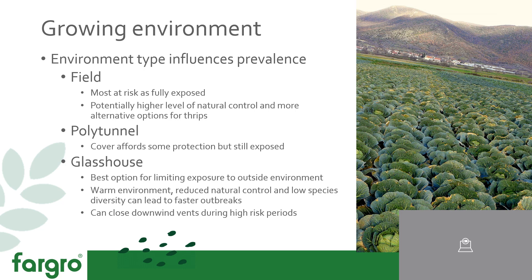The next consideration is the growing environment. The environment type is obviously going to influence prevalence. If you're growing in a field, as in the image, then you're going to be most at risk of thrips getting in because you're fully exposed — but you'll also have a higher level of natural control due to the surrounding environment and more alternative options for thrips to attack. If you select resistant varieties, thrips may decide to move away to non-crop species nearby. In a polytunnel, you're going to have cover which will afford some protection, but you do still have exposure.